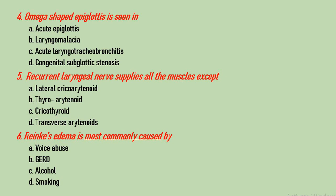Question number 5: the recurrent laryngeal nerve supplies all muscles of the larynx except which? Options are lateral cricoarytenoid, thyroarytenoid, cricothyroid, and transverse arytenoid. Cricothyroid is the only muscle supplied by the superior laryngeal nerve and not by the recurrent laryngeal nerve.